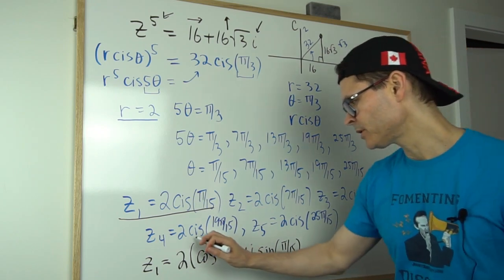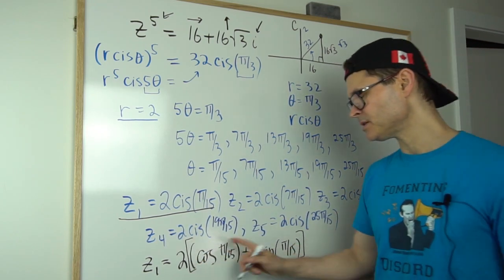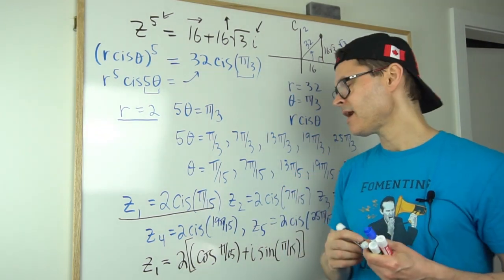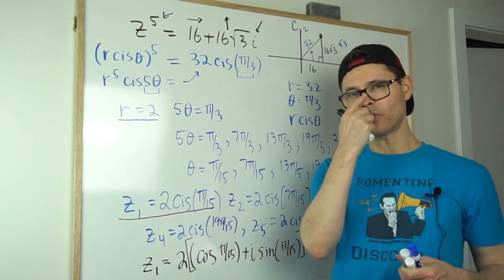And I'll put a big set of brackets around that because the 2 has to be distributed through. Anyway, with a little bit of calculator work, it could give you those values and you would have it in Cartesian form as well.